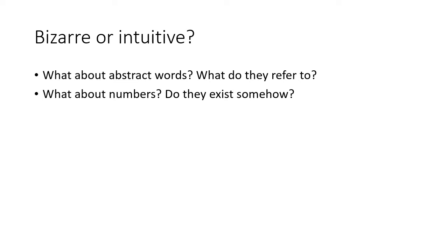What about numbers? Do they exist somehow? When I say 'five,' it can denote five apples, five bears, five friends, five cats in the world. But here we have an intuitive feeling that numbers are something more than sets of all things of the same number. So the question is, do they exist somehow — for example, in this immaterial world of forms or ideas? When you think about numbers and mathematics, you usually have a very strong feeling that Platonism is somehow right.